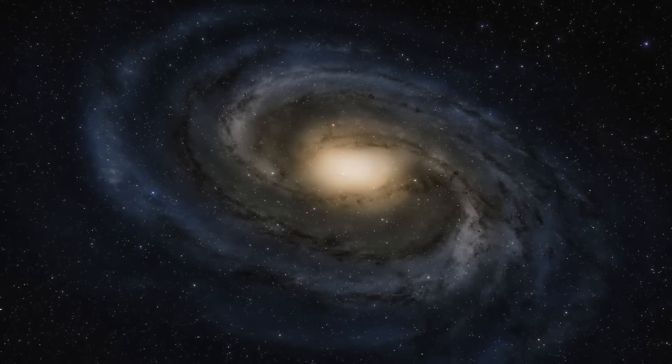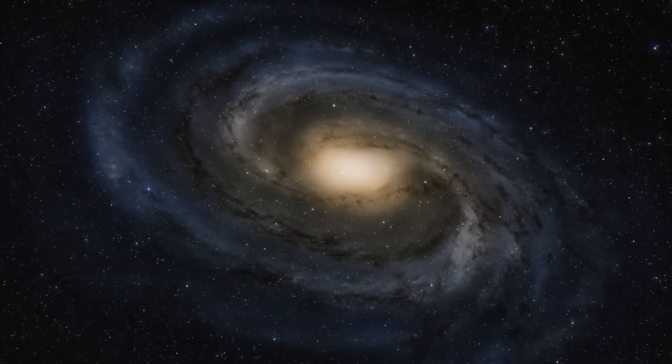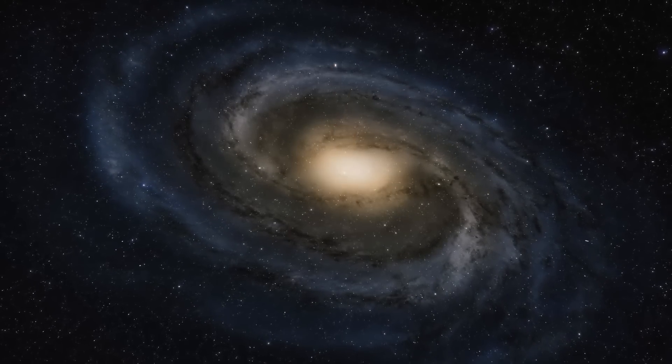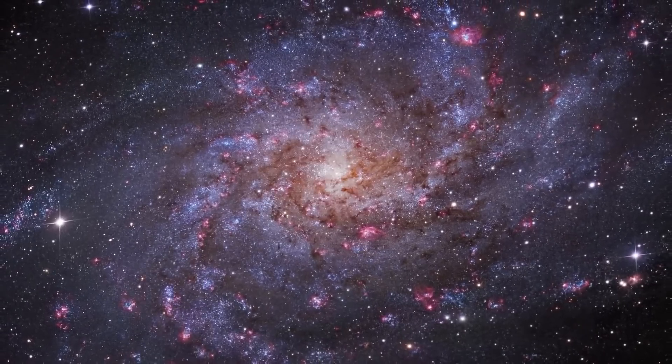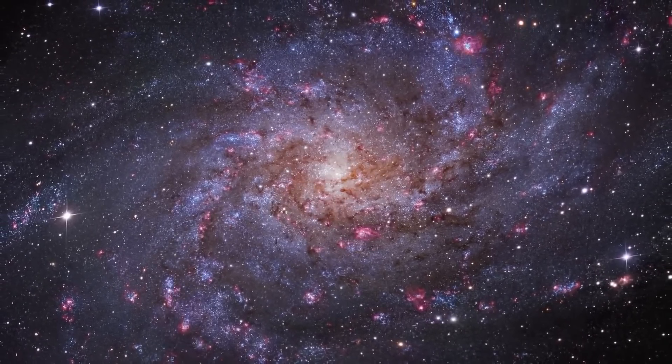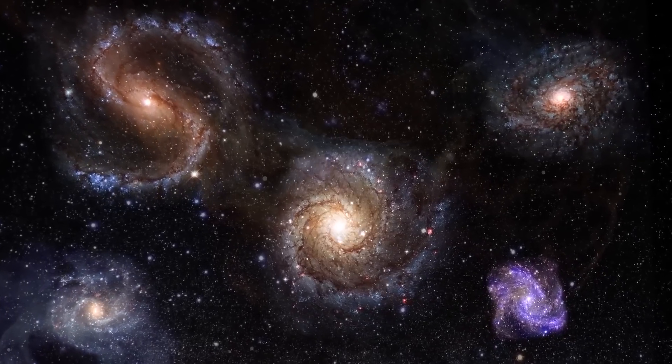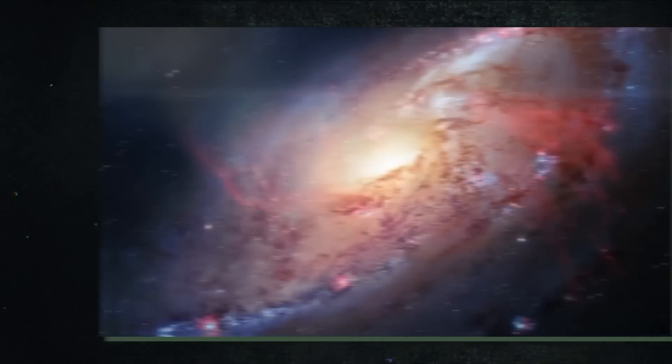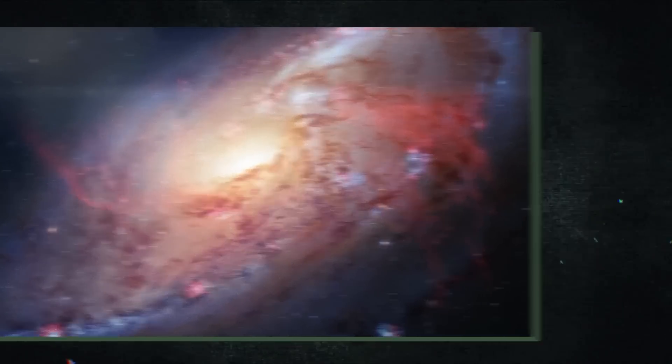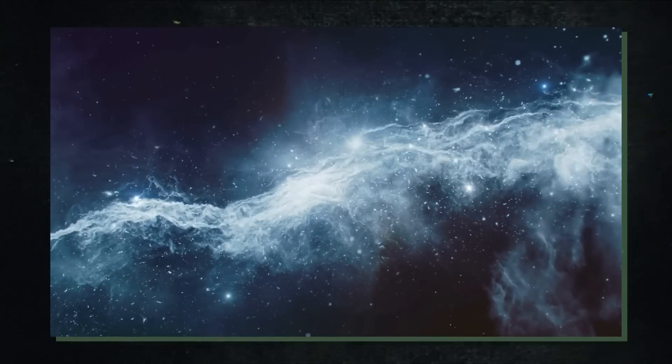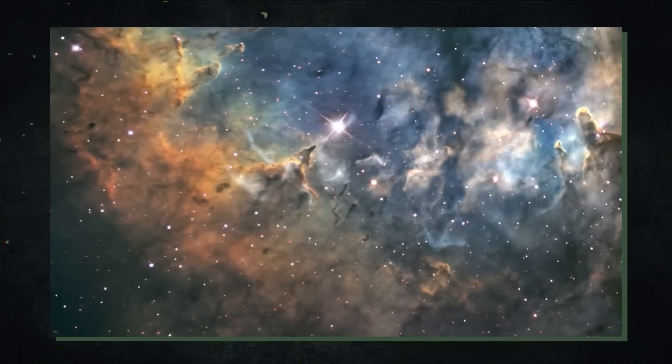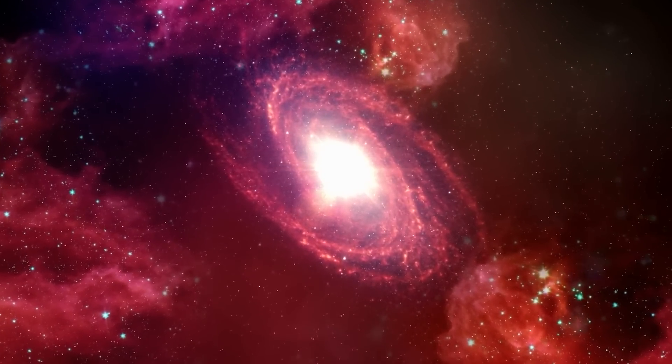The Milky Way and Andromeda galaxies are the two largest galaxies in the so-called Local Group, a collection of several dozen massive and minute galaxies that are all bound by gravity. Because Andromeda and the Milky Way are the biggest, they control the gravitational pull and the group's future. The Milky Way is far smaller than the Andromeda galaxy, which is speeding toward us at 68 miles per second.